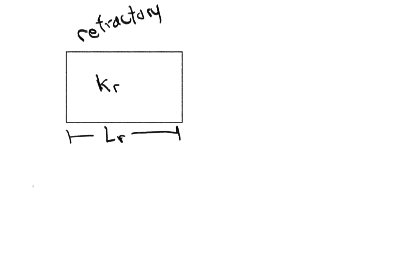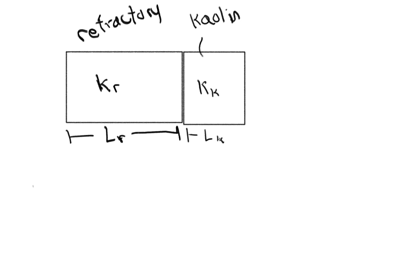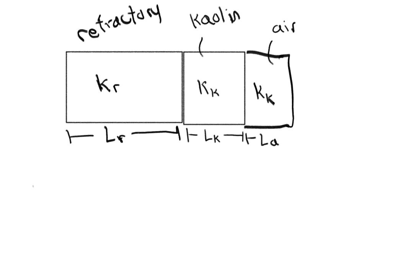Then next, we have a layer of Kaolin, said to have a thermal conductivity k sub k and a length of l sub k. We are also told in the problem that there may be a layer of air, and we are told that we can treat this layer as having the same thermal conductivity as the Kaolin. But I will list its length as l sub a.